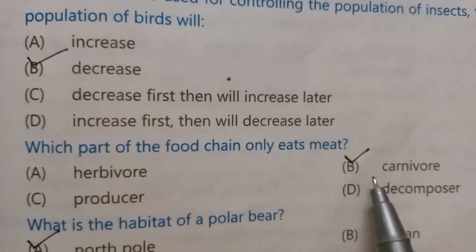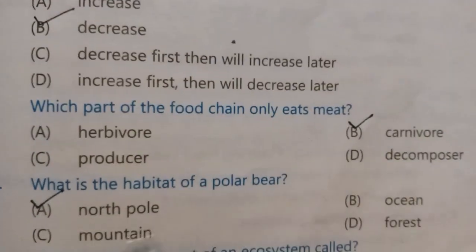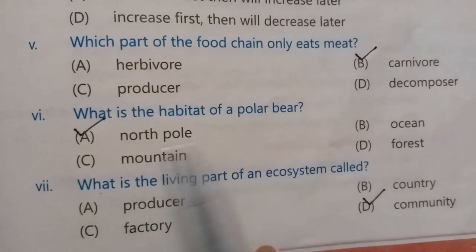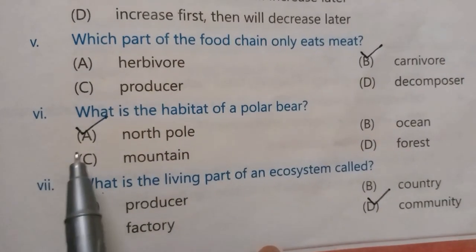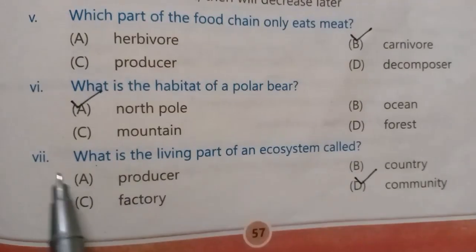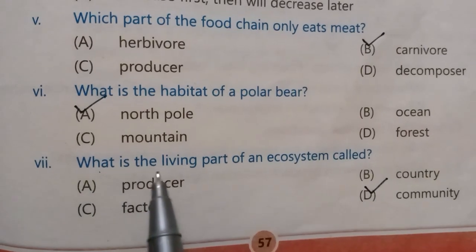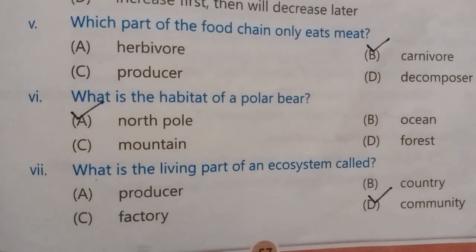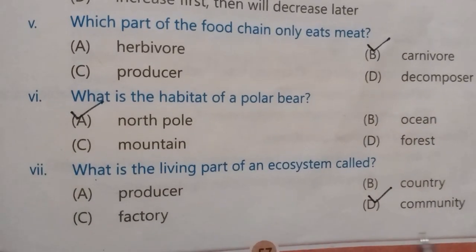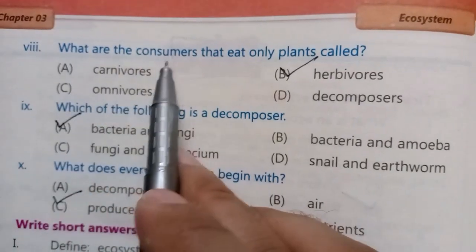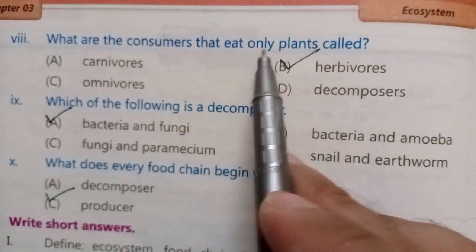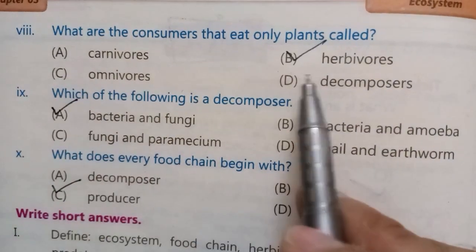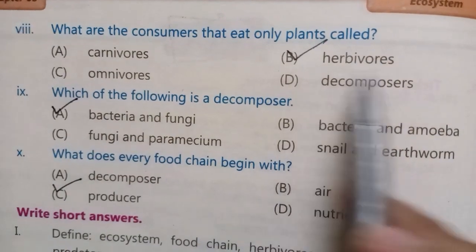Which part of the food chain only eats meat? The correct answer is: carnivores. What is the habitat of a polar bear? The correct answer is: the North Pole. What is the living part of an ecosystem called? The correct answer is: community. What are the consumers that eat only plants called? The correct answer is: herbivores.